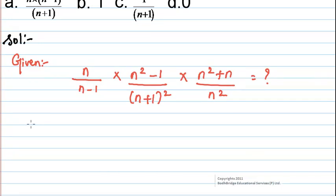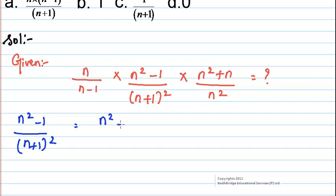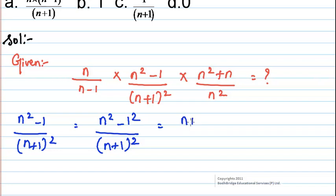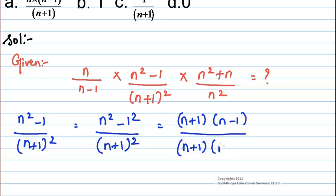We can write (n²-1)/(n+1)² as (n²-1)² / (n+1)². This is in the form of a²-b², which means we can write it as (a+b)(a-b). Therefore, (n+1)(n-1)/(n+1)², which simplifies to (n-1)/(n+1).